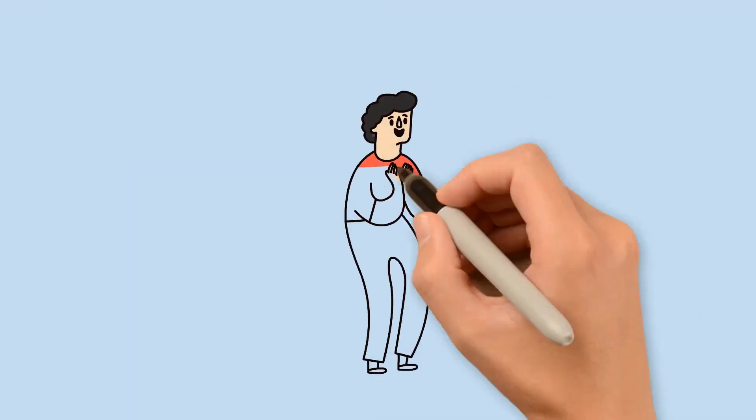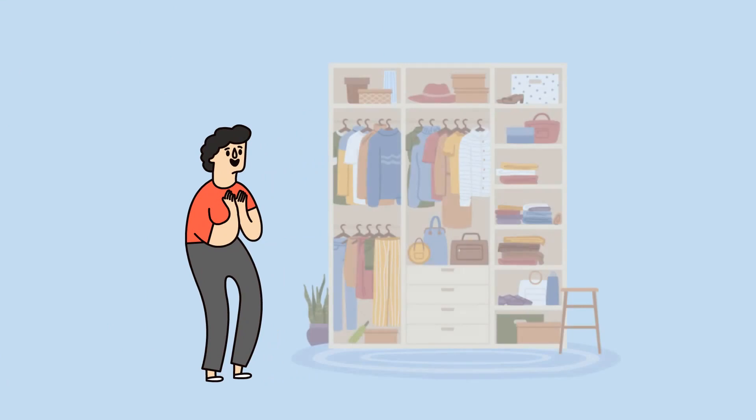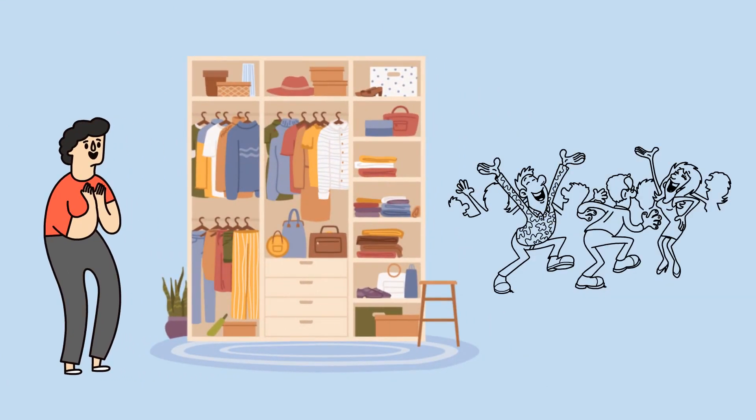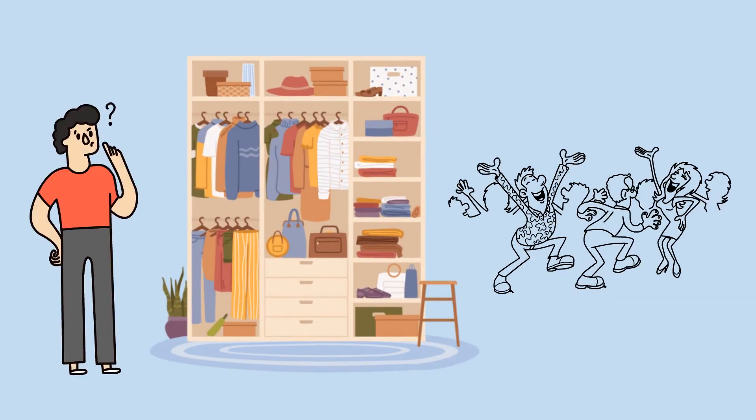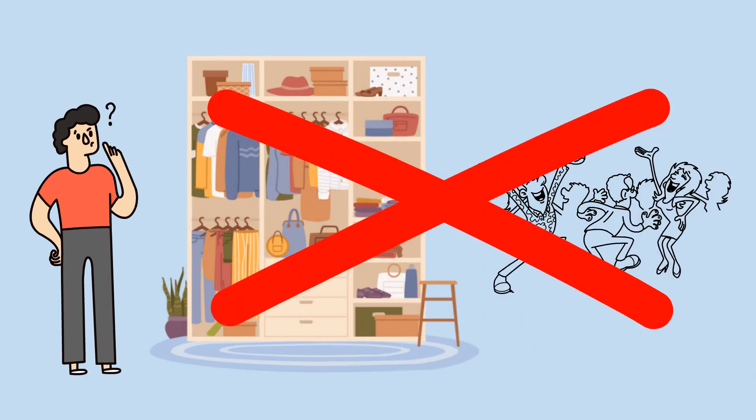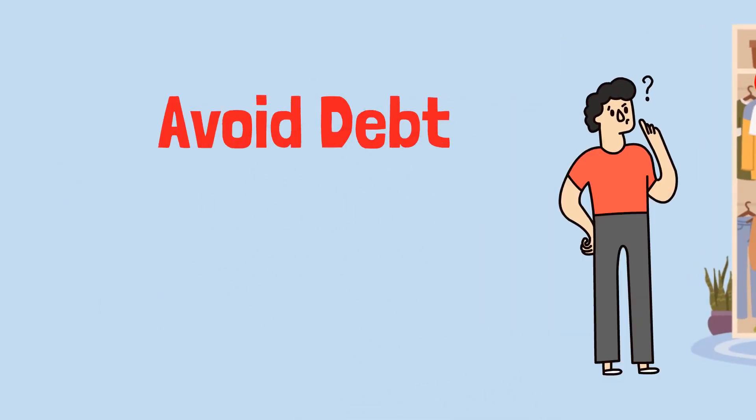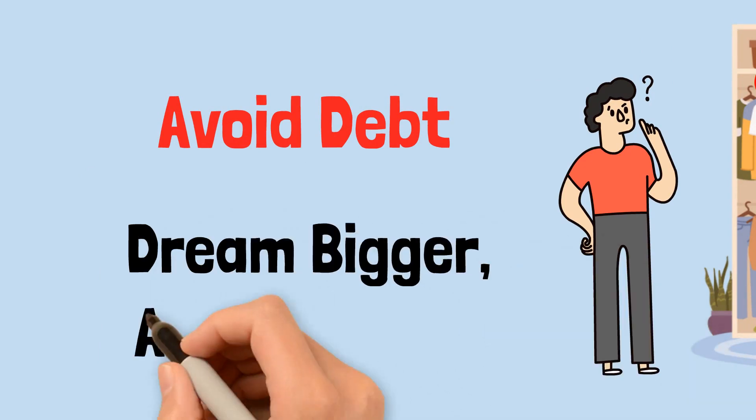At first, Liam indulged in his newfound freedom by buying a new wardrobe and going out partying. However, he soon realized that this kind of lifestyle was not sustainable. He wanted more than just avoiding debt. He wanted to dream bigger and achieve more.